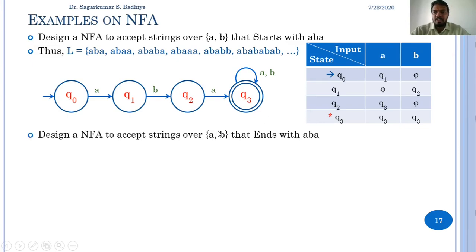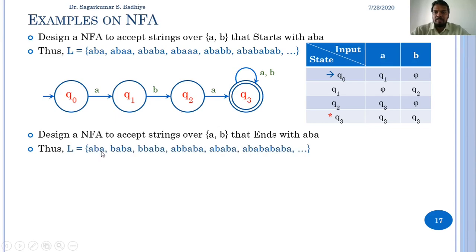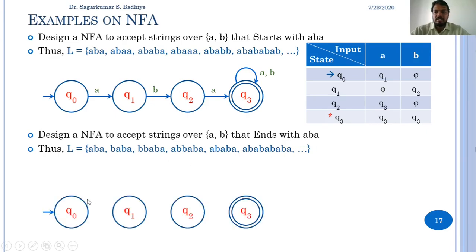Let us design another NFA to accept strings over A and B that end with ABA. Such strings include ABA, BABA, BBABA, ABBABA, and so on — the string can start with any combination of A or B, but the last three characters must be ABA. The minimum string is again ABA with length 3, so we make four states, with q0 as initial and q3 as final.